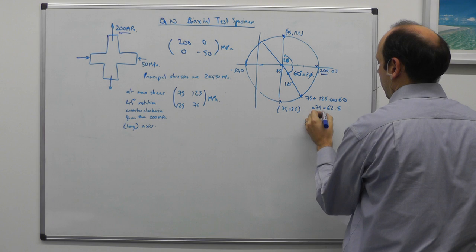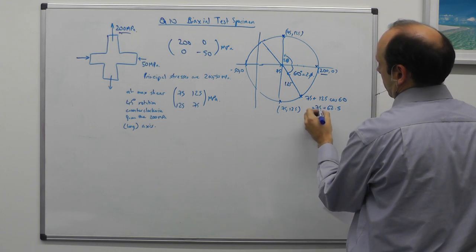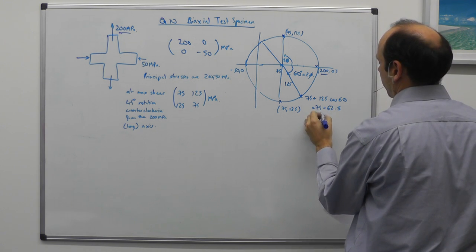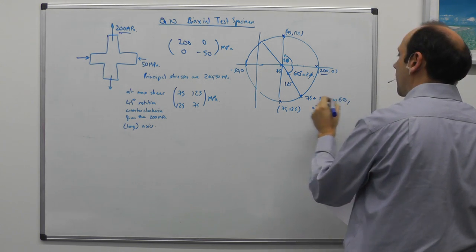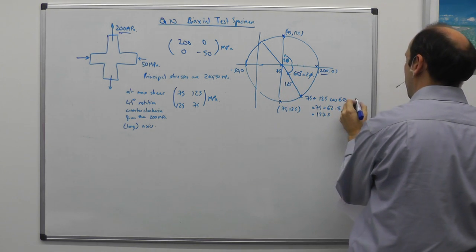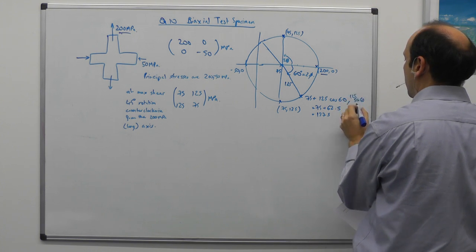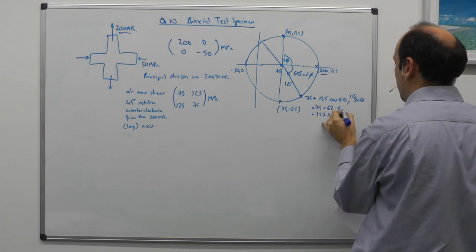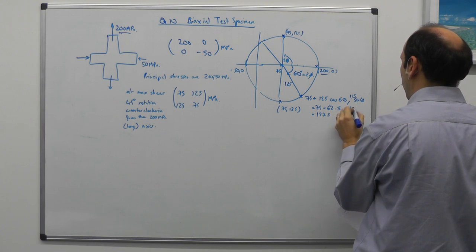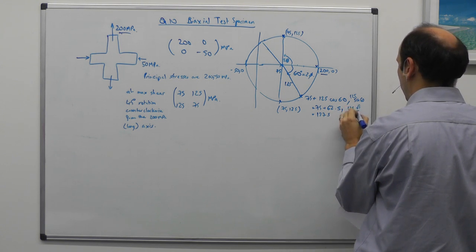And that's equal to 137.5 comma sin 60 times 125. Sin 60 is root 3 over 2. So comma 125 times root 3 over 2.